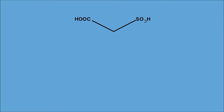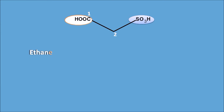In the next example, two functional groups are present: one is the carboxylic acid and the other is the sulfonic acid — both acidic. Again, carboxylic acid should be given more preference than sulfonic acid, so we start numbering: one and two. There are only two carbons, so the root name is ethane minus 'e' plus 'oic acid', giving ethanoic acid.